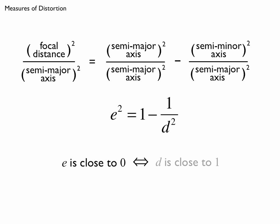And so let's just notice that when E is close to 0, that's to say D is close to 1. And these cases are both close to being circular. And when E is close to 1, D is very large. And this is the case of high distortion.